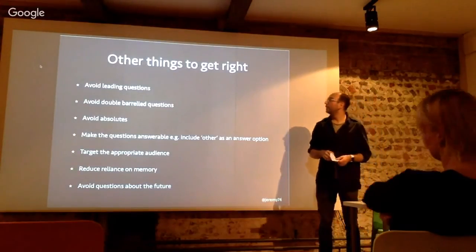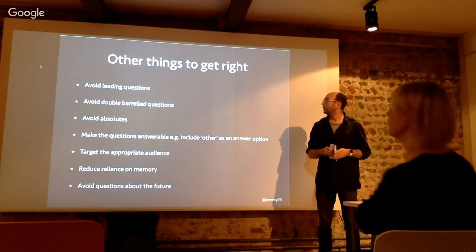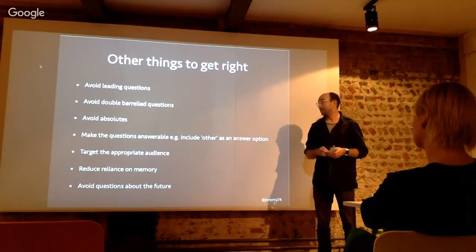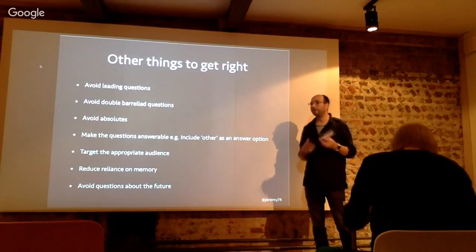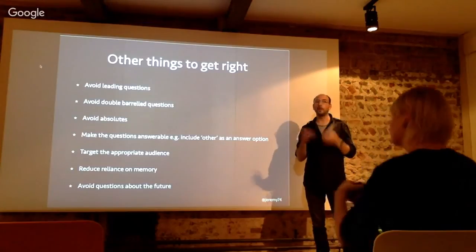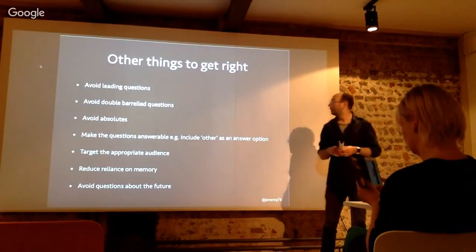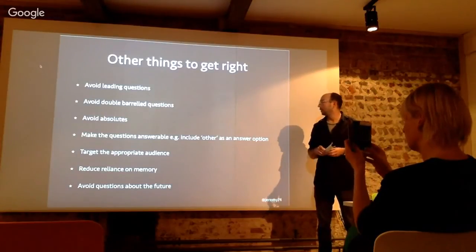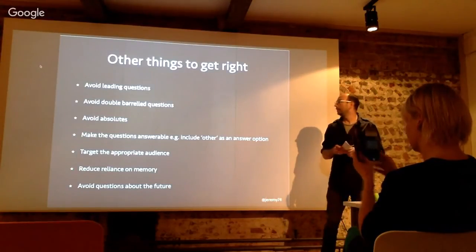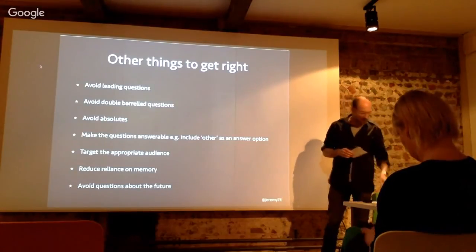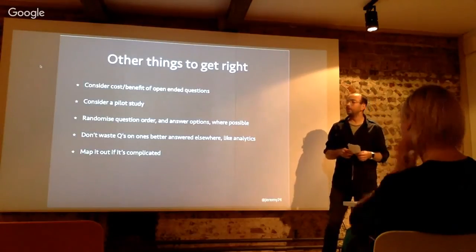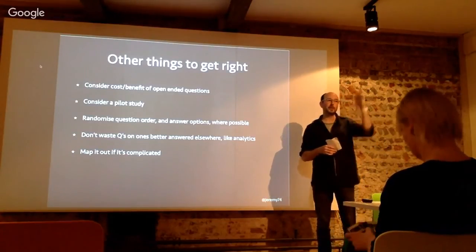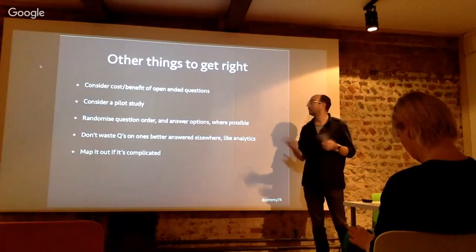A couple of other things to get right: avoid leading questions; avoid double-barreled questions; avoid absolutes like 'never' and 'always', which are rarely the case and make it hard for people to answer. If people feel they can't give the information they want because the question format or answer format doesn't match, they're more likely to give up. Make the questions answerable — include an 'other' option where appropriate. Target the right audience. Reduce reliance on memory. Avoid questions about the future, which are really unreliable. Consider the cost-benefit of open-ended questions — if you have time to go through free text, great, but try to anticipate how you'd code those answers and give those as options to save time.